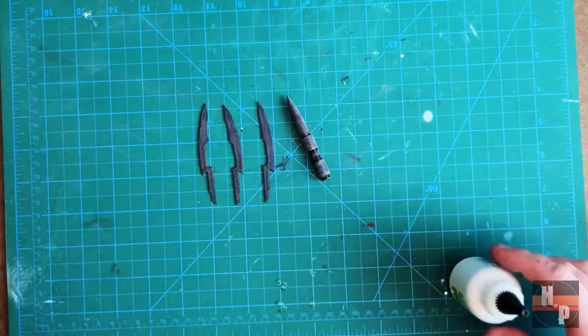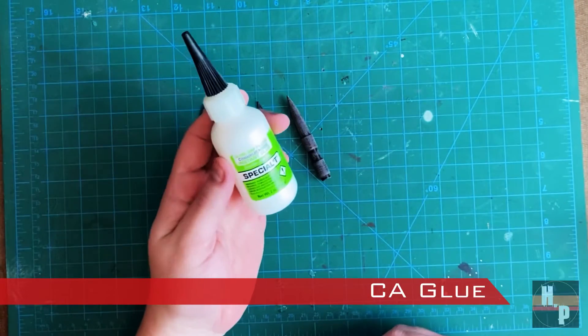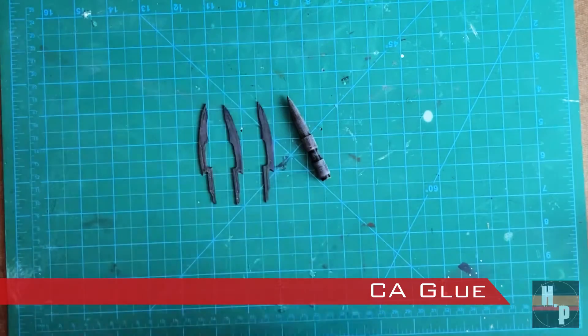To attach the acetate pieces together, I used CA glue and then used Zip Kicker to cure the glue in just a matter of seconds.